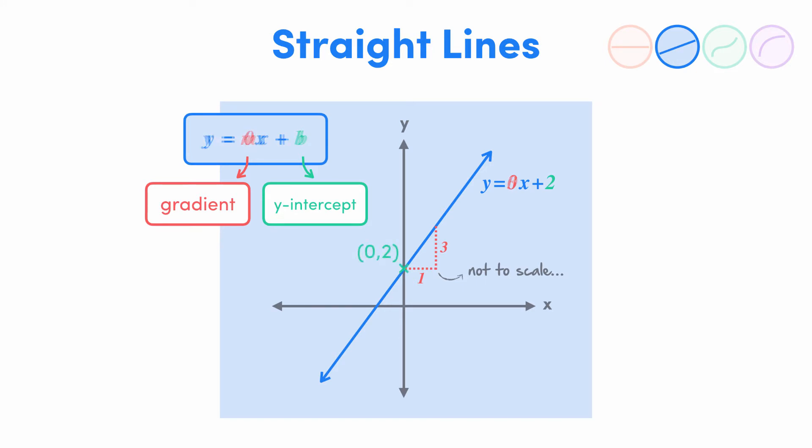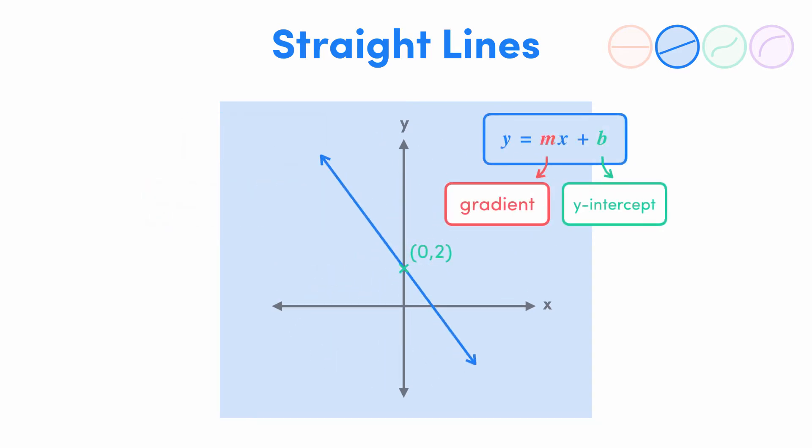If m is 0, then the mx term disappears, and you're just left with y equals b, the graph of a constant function, like before, which of course has a gradient of 0 because it's a horizontal line. Also watch out for if m is negative. If this is the case, the line will slope from the top left to the bottom right. For example, given y equals negative 3x plus 2 has a gradient of minus 3, the graph will move down 3 spots every time it moves along 1x value.